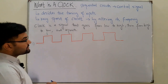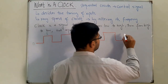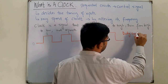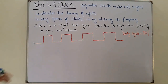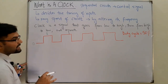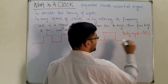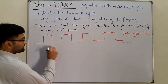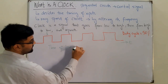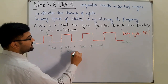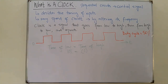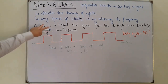The clock signal is a signal with a duty cycle of 50 percent. The time of the low signal is equal to the time of the high signal in the overall signal. The time for which the signal is zero is equal to the time for which the signal is one. We've already said that we can vary the speed of the circuit by altering its frequency.